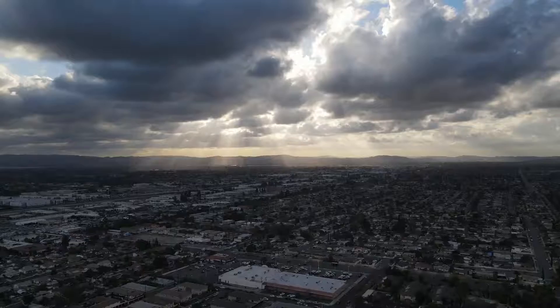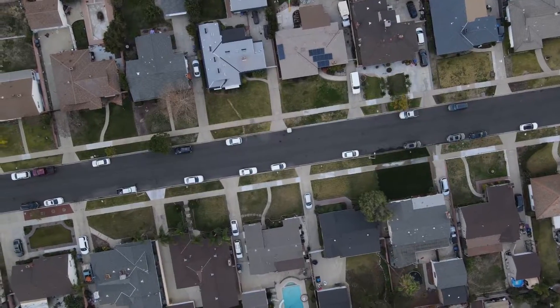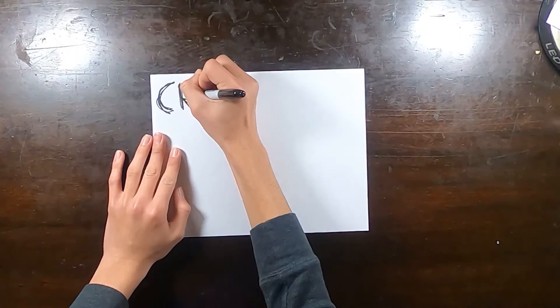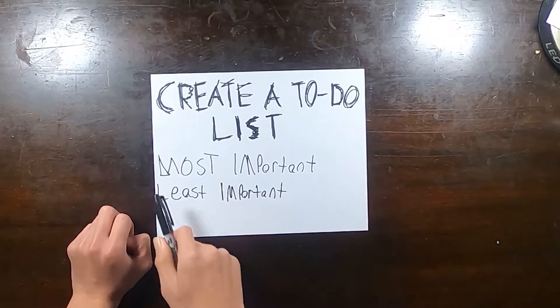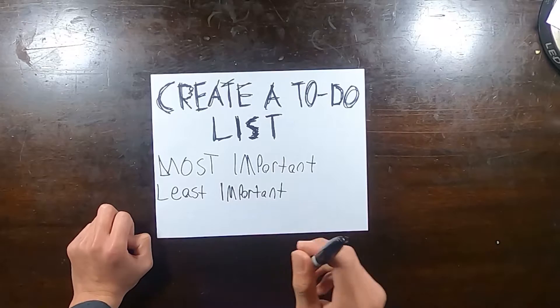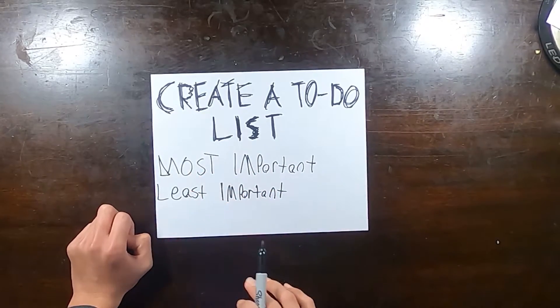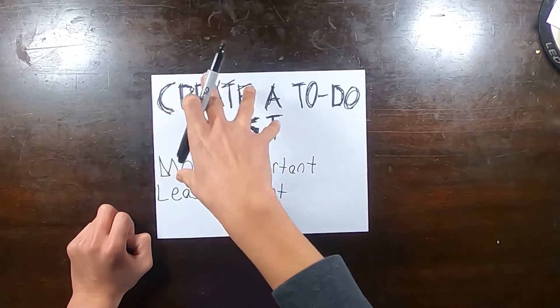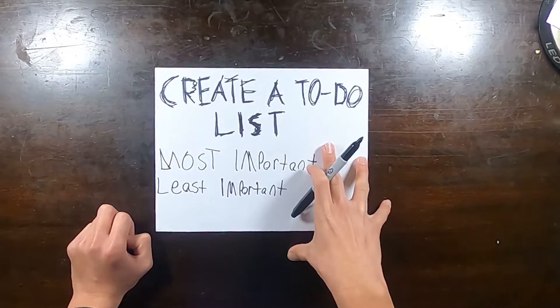Now the second thing to do is create a to-do list. Create a to-do list from most important to least important. And this will go back with the whole prioritization thing. Once you prioritize what you consider the most important and least important, create a to-do list.